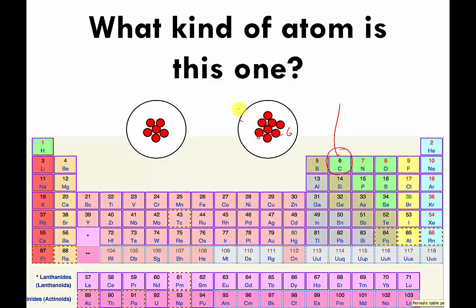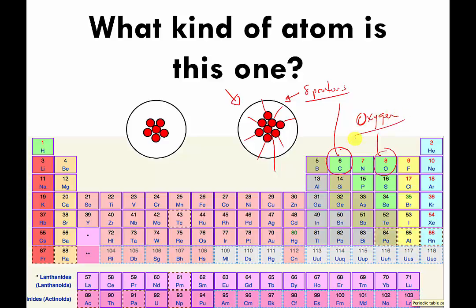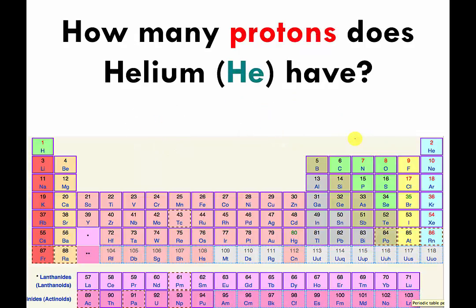Here's a different one — pause and try to guess what type of atom this is. Unpause: let's count the protons — one, two, three, four, five, six, seven, and an eighth one in the middle. This atom has eight protons, so the atomic number is eight. We find the box with an eight in the periodic table and it has a capital letter O. O is the symbol for oxygen, so this is a cartoon version of an oxygen atom.